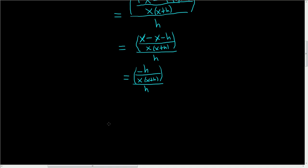Almost there. So we have this, which is negative h over x times x plus h, and it's being divided by h. When you divide by h, you multiply by the reciprocal. So it's really h over 1, so you multiply by 1 over h. The h's cancel and we're left with negative 1 over x times x plus h.